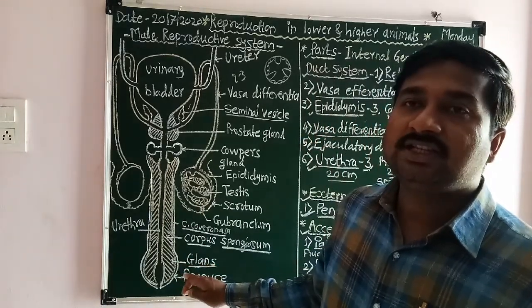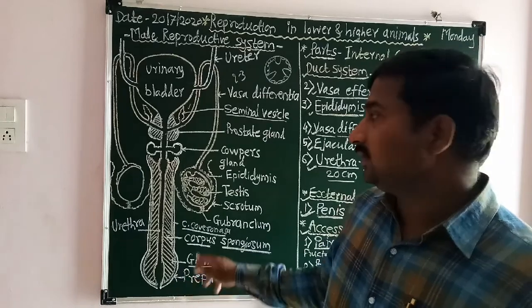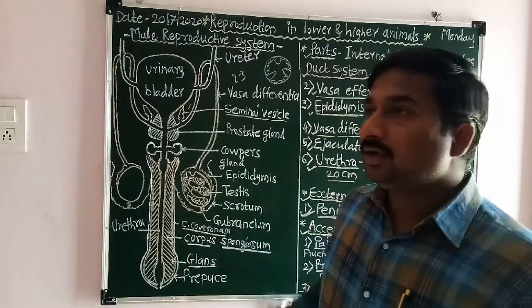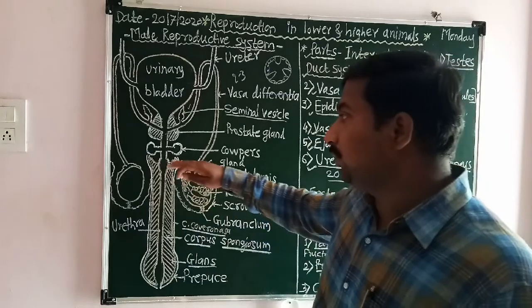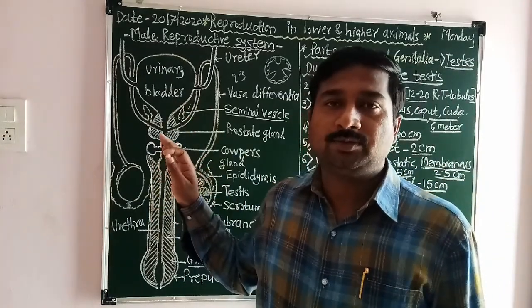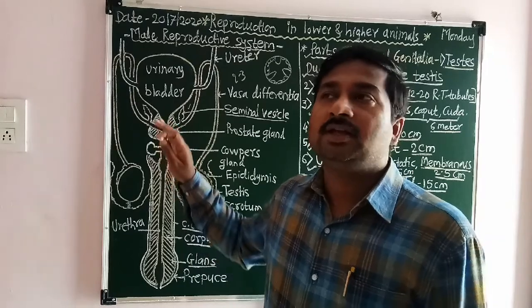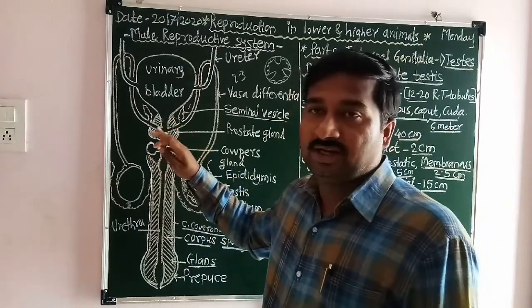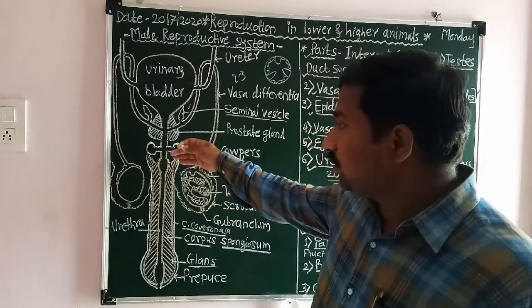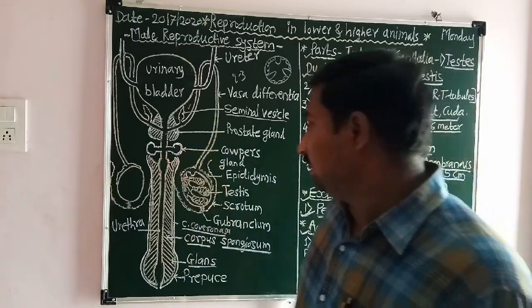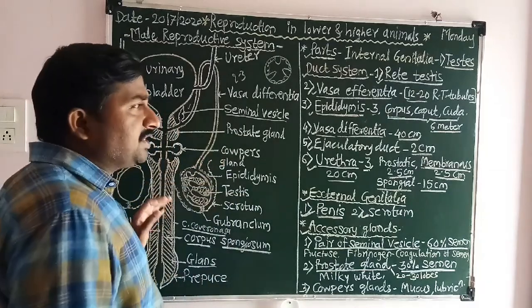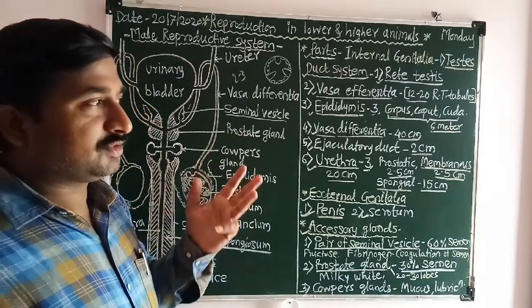The penis is an erectile, pendulous, cylindrical, muscular, hanging organ present in front of the scrotum and in between the thigh region. It is divided into mainly three parts: the root, the shaft, and the glans penis, through which the penis is attached to the body.